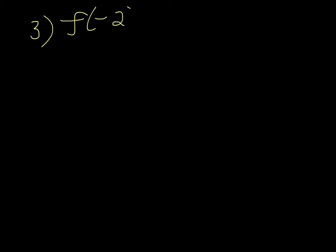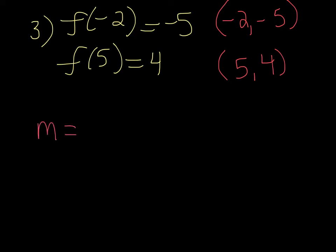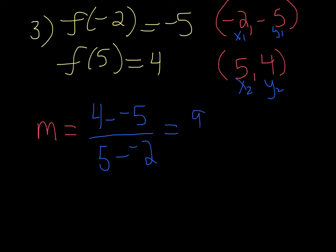Number three: if f of x is a linear function, f of negative 2 is equal to negative 5, and f of 5 is equal to 4, find an equation for f of x. This is really just giving you two points: negative 2, negative 5, and 5, 4. We're going to use the slope formula again — call this x1, y1 and x2, y2. That's 4 minus a negative 5 over 5 minus a negative 2, and we get 9 over 7.